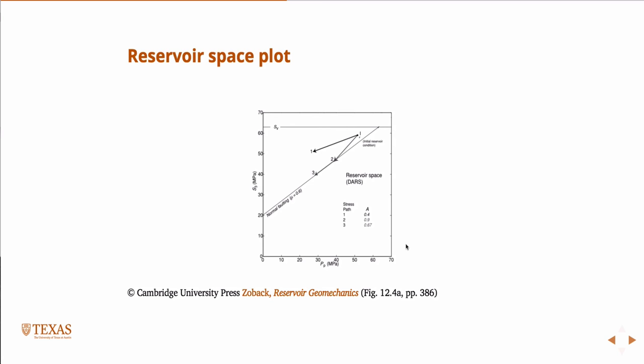So in this case, A, the slope of this line is .4, and there's no issue with faulting. So you're gonna just, as you deplete the reservoir, at that slope, you're always gonna stay above this line, and therefore, you're never going to have any trouble with faulting.